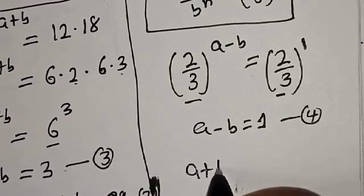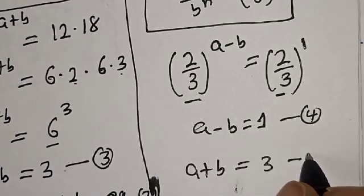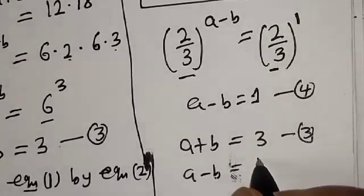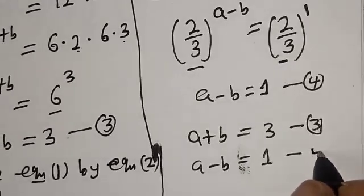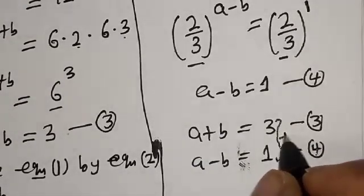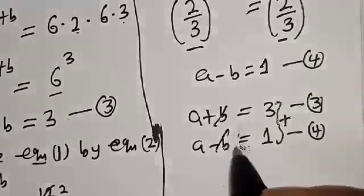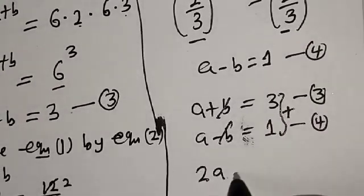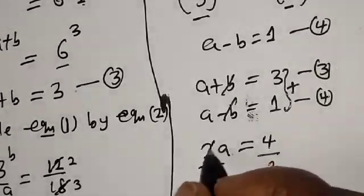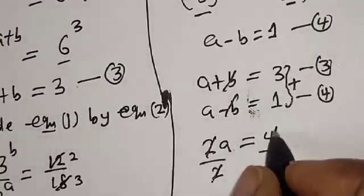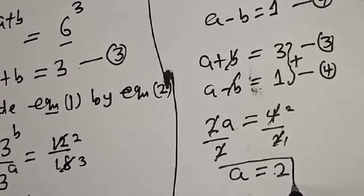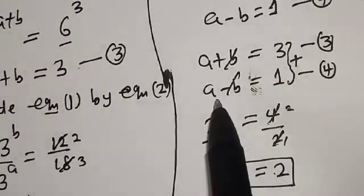Now let's solve equations 3 and 4 simultaneously. Equation 3 is A plus B equals 3, and equation 4 is A minus B equals 1. Let's add the two equations together — B will cancel with negative B. Then 2A equals 4. Divide both sides by 2, so A is equal to 2.